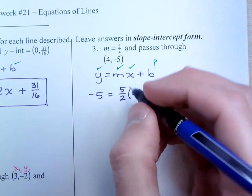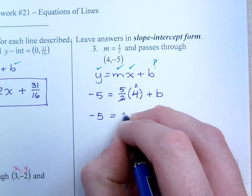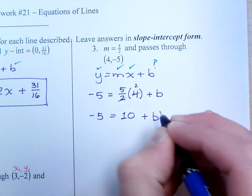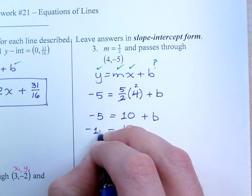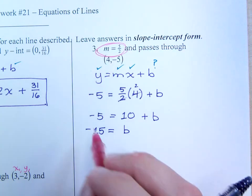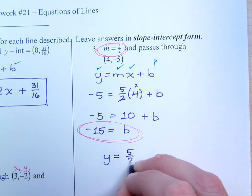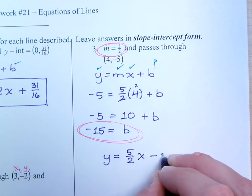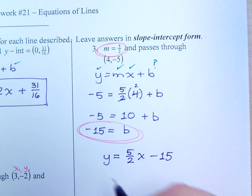Now, simplify before things get out of hand. 2 goes into 4 twice. So, negative 5 is equal to 10 plus b. When I move the 10 to the other side, I have the b equals negative 15. So, I can take my slope that was given, the b that I found, and I put it all together. So, y is equal to 5 halves x. Your b, your y-coordinate of the y-intercept is negative 15. And that's it.